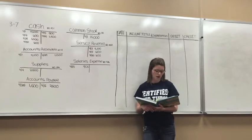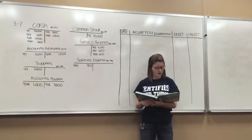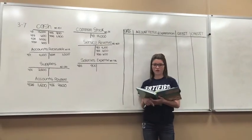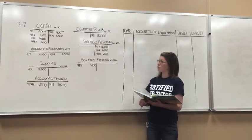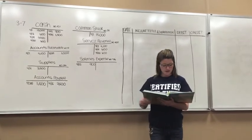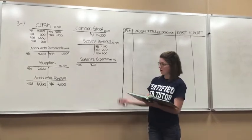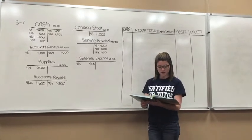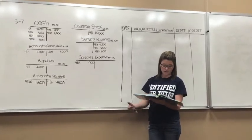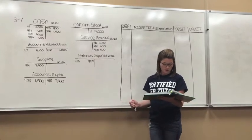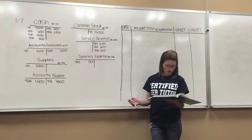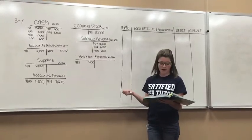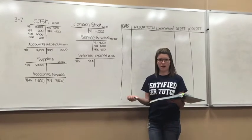Today the concept we're going to work on is Chapter 3: Journalizing Transactions from Account Data and then Preparing Trial Balance. On 3.7, the T-accounts above are summarizing the ledger of Mardi Gras Catering Corporation at the end of their first month. We're going to complete the general journal entries from which the postings to cash were made, and then we're also going to prepare the trial balance.